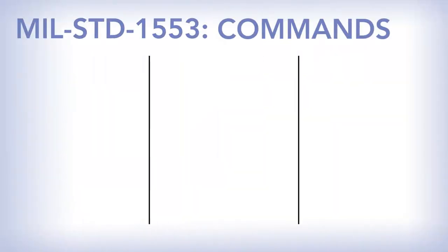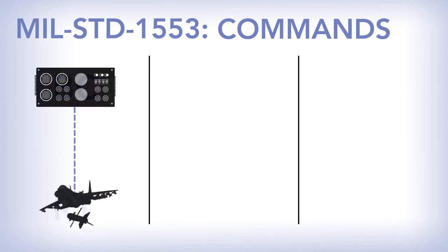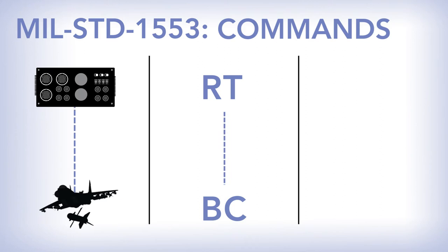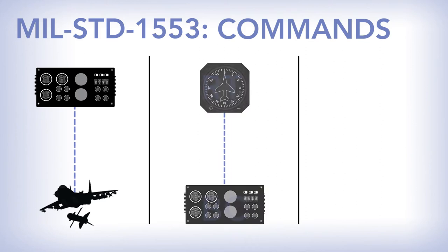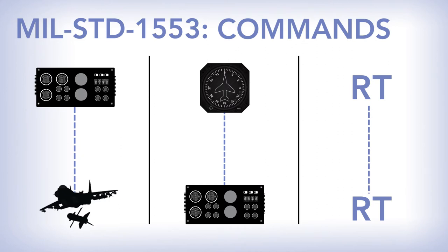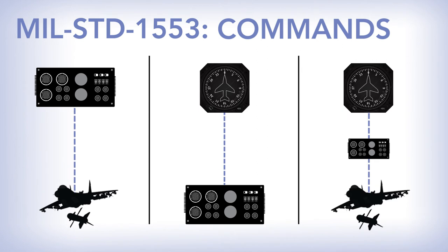1553 uses a fixed set of commands. The most common are BC to RT, which means the bus controller is going to send data to a remote terminal — for example, a command to fire a missile. The command RT to BC is a request to have the RT send data to the bus controller — for example, information from an avionics instrument. There is also an RT to RT command, used when the bus controller commands one RT to get ready to receive data, then commands another RT to transmit the data to the receiving RT.